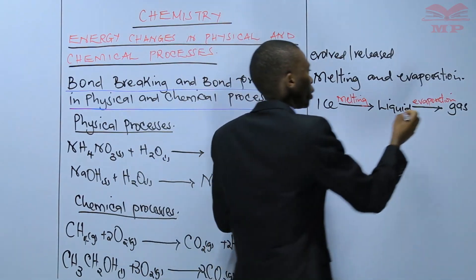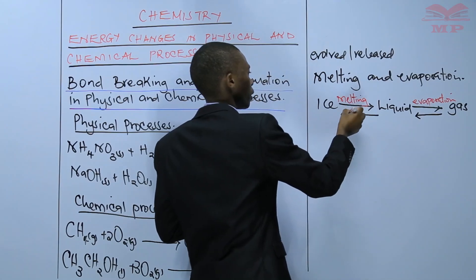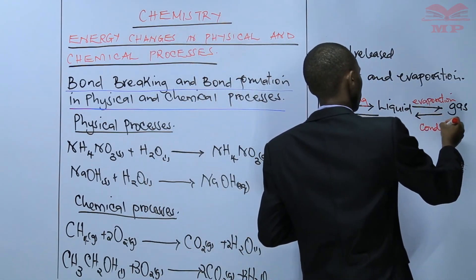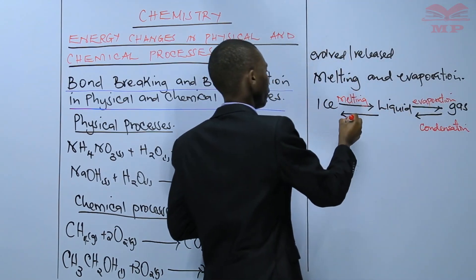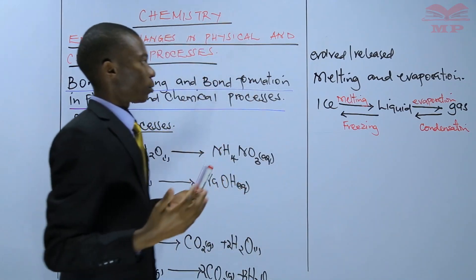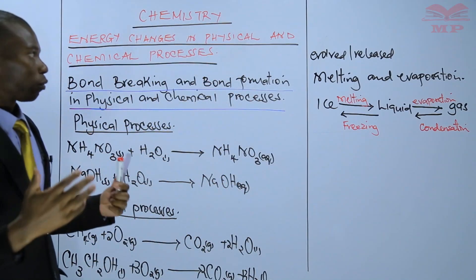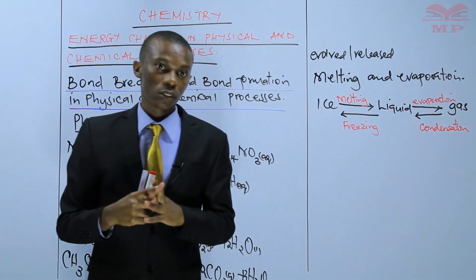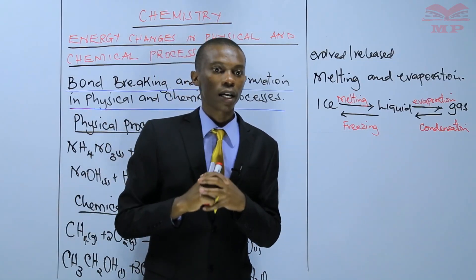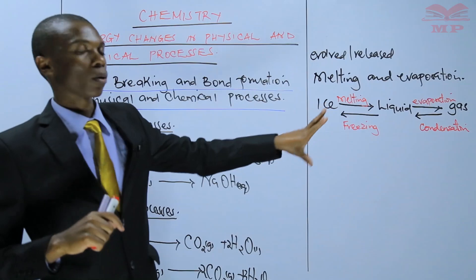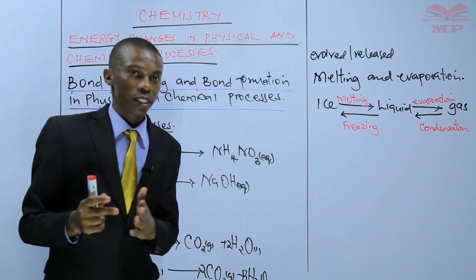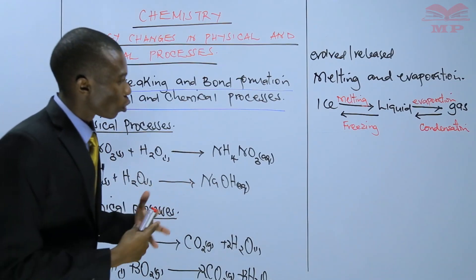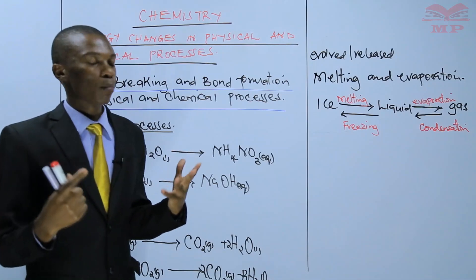Later, you may condense the gas to get a liquid, and then freeze the liquid to get ice. These processes — condensation and freezing — involve bond formation. You are forming bonds by bringing together the molecules of water in gas to form a liquid, and then uniting them further to form a solid. Therefore, melting and evaporation require the application of heat to break bonds, while freezing and condensation involve loss of heat.